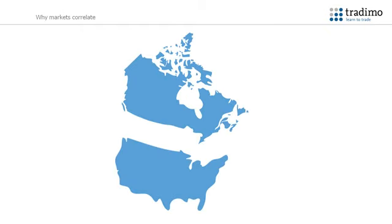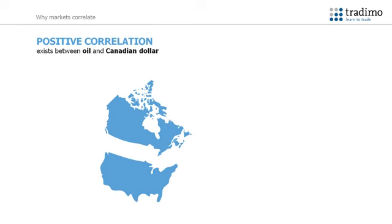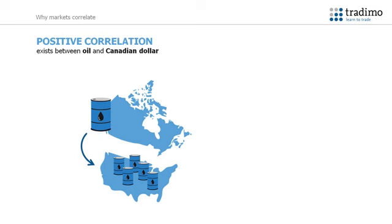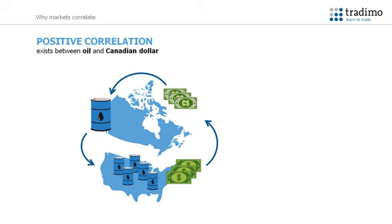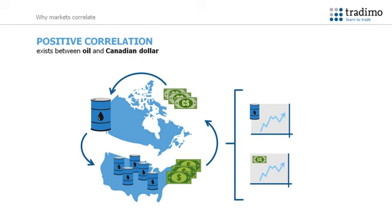Using a further example, we can see a positive correlation between oil and the Canadian dollar. Canada is currently one of the largest exporters of oil in the world, and the US is the largest consumer of oil. Almost all of Canada's oil is exported to the US. Oil importers have to use Canadian dollars to be able to buy Canadian oil, and so when the price of oil increases, it takes more Canadian dollars to purchase it. There is now more demand for the Canadian dollar, and so its value increases in conjunction with the price of oil, resulting in a positive correlation.